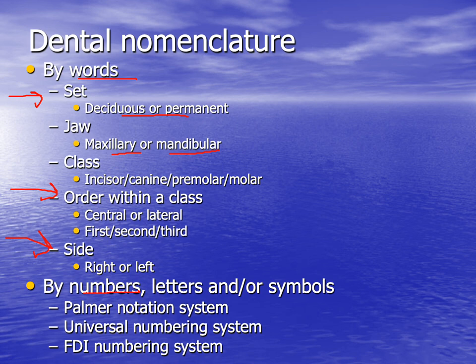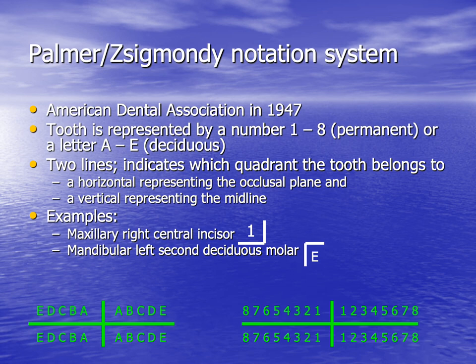Instead of using all these words to describe one tooth, we can use one of the notation systems that use numbers, letters and symbols. We have the Palmer notation system, the Universal numbering system, and the FDI numbering system. The Palmer or Zsigmondy notation system is used by the American Dental Association and is the one used here in Jordan.